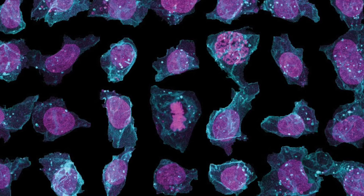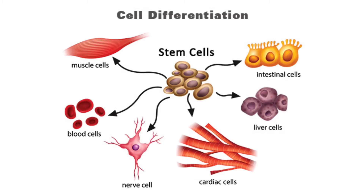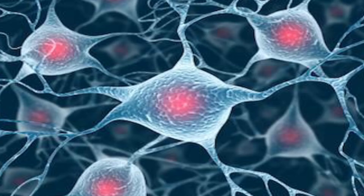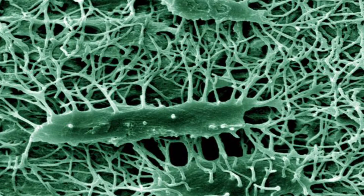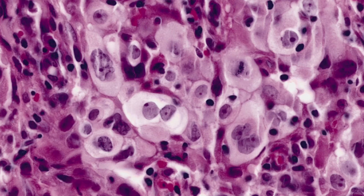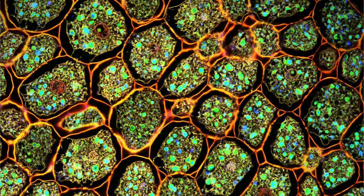While your body was making all these cells, the cells were becoming specialized to do their job through cell differentiation. Cell differentiation produces the brain cells, eye cells, muscle cells, bone cells, lung cells, and all the different kinds of cells in your body.